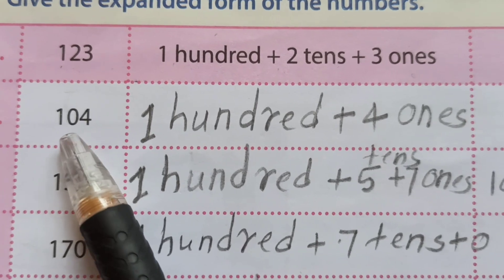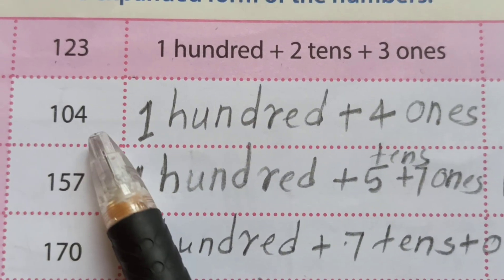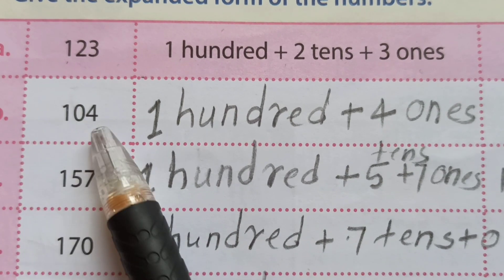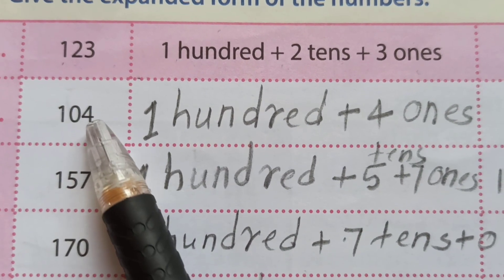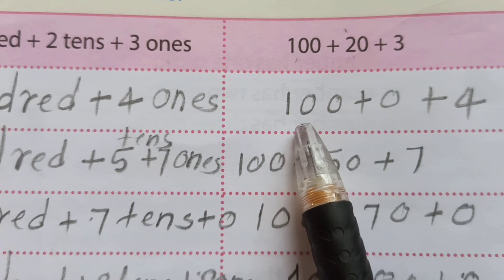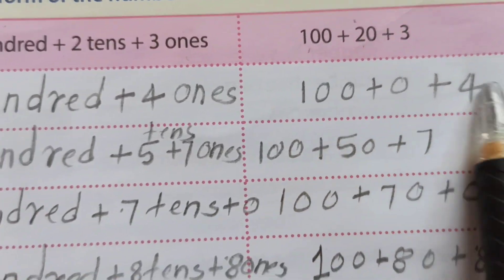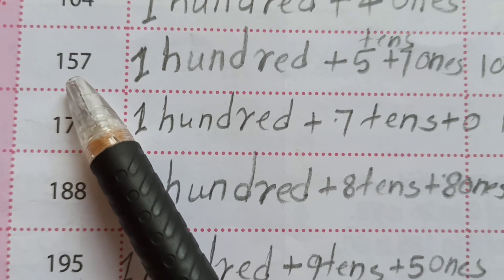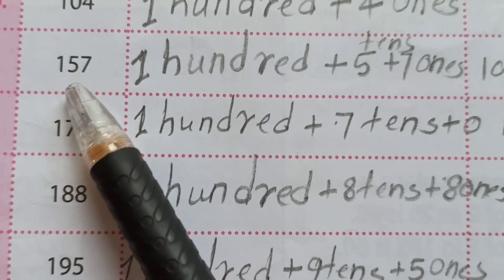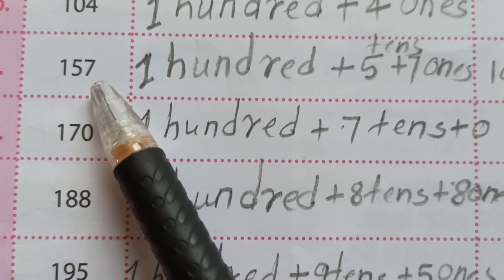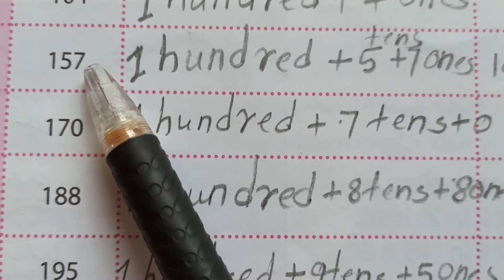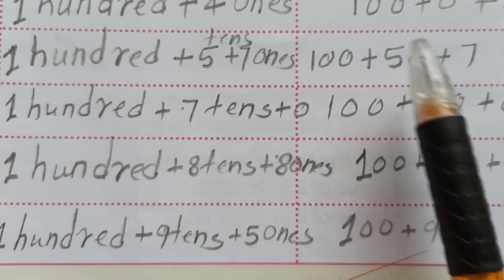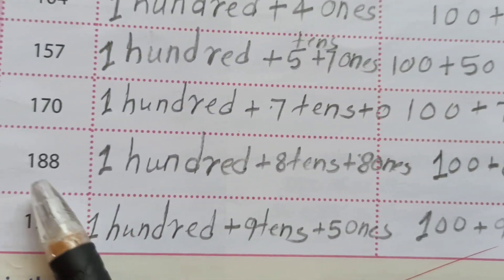Another example: 104. How we expand this number: 1 hundred, 0 tens, 4 ones — so 100 plus 0 plus 4, which equals 104. Next: 157 means 100 plus 5 tens plus 7 ones, which is 100 plus 50 plus 7.